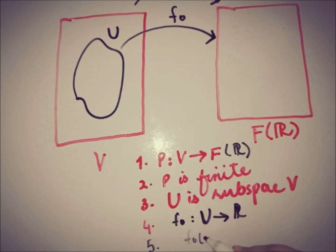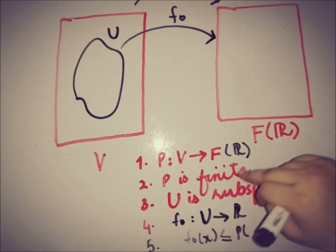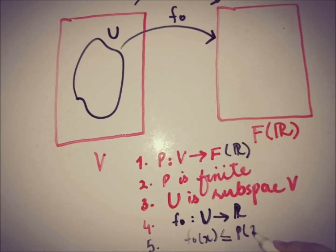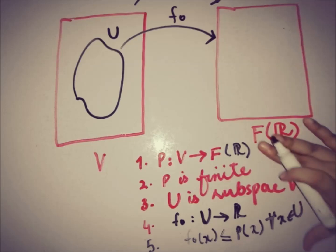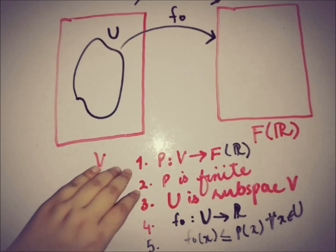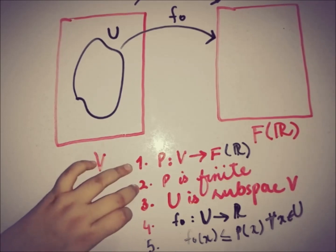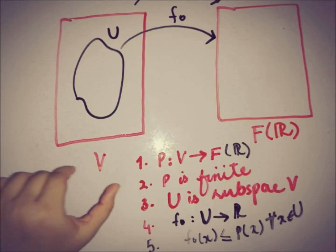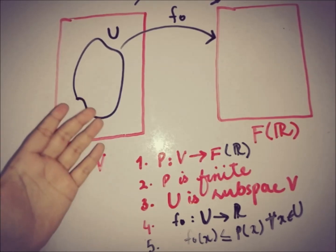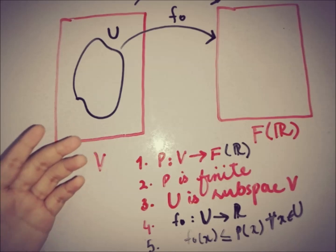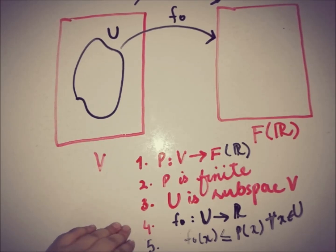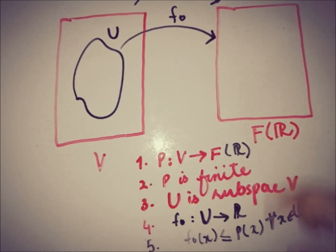The relation between P and F₀ given in the statement is that F₀(x) ≤ P(x) for all x in U. So these are the five hypotheses: a finite convex functional P on a linear space V, a subspace U, and a linear functional F₀ from U to R such that F₀(x) ≤ P(x) for all x in U.